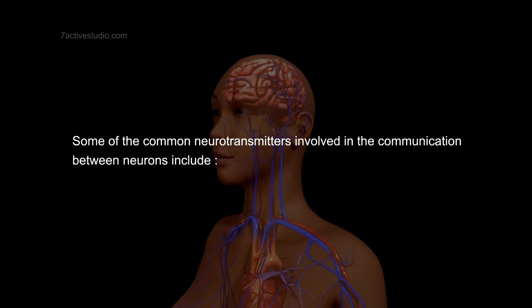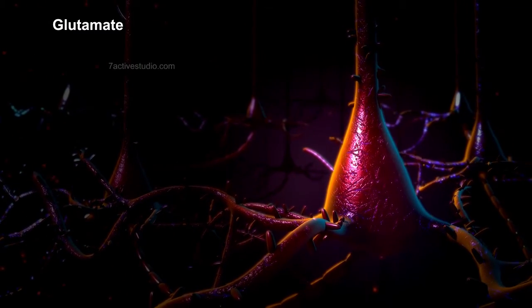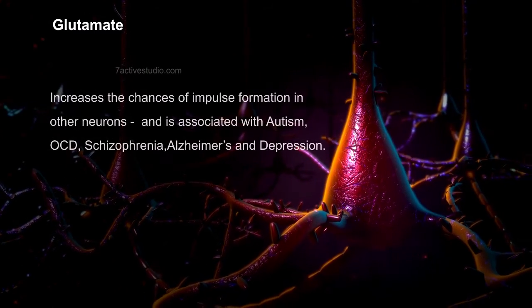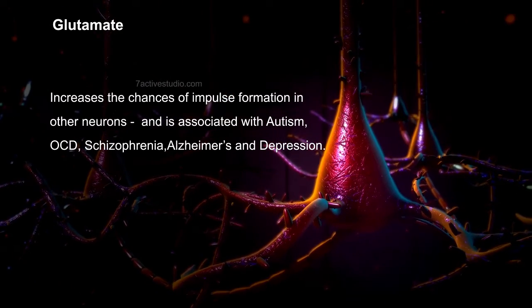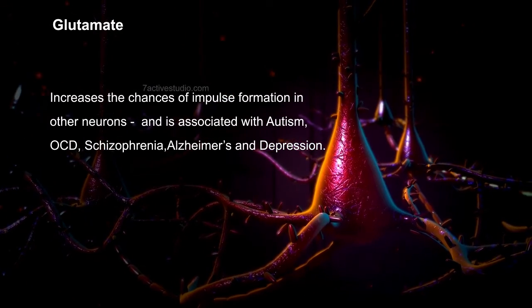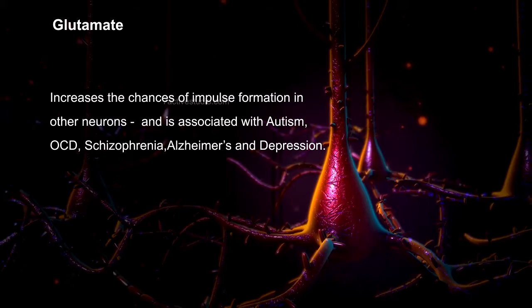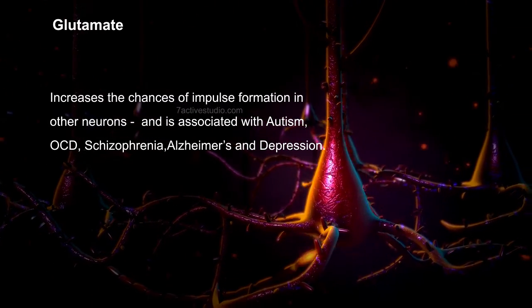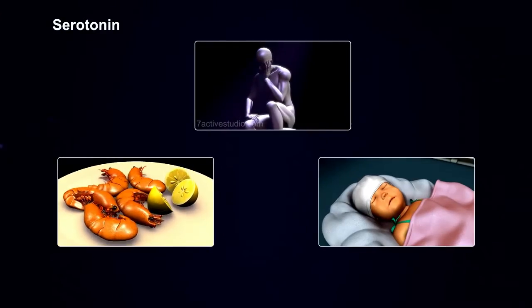Some of the common neurotransmitters involved in the communication between neurons include: 1. Glutamate, which increases the chances of impulse formation in other neurons and is associated with autism, OCD, schizophrenia, Alzheimer's, and depression.